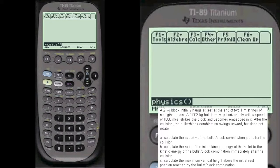I'm going to read it here. A two kilogram block initially hangs at rest at the end of two one-meter strings of negligible mass. A 0.003 kilogram bullet moving horizontally with a speed of 1,000 meters per second strikes the block and becomes embedded in it.